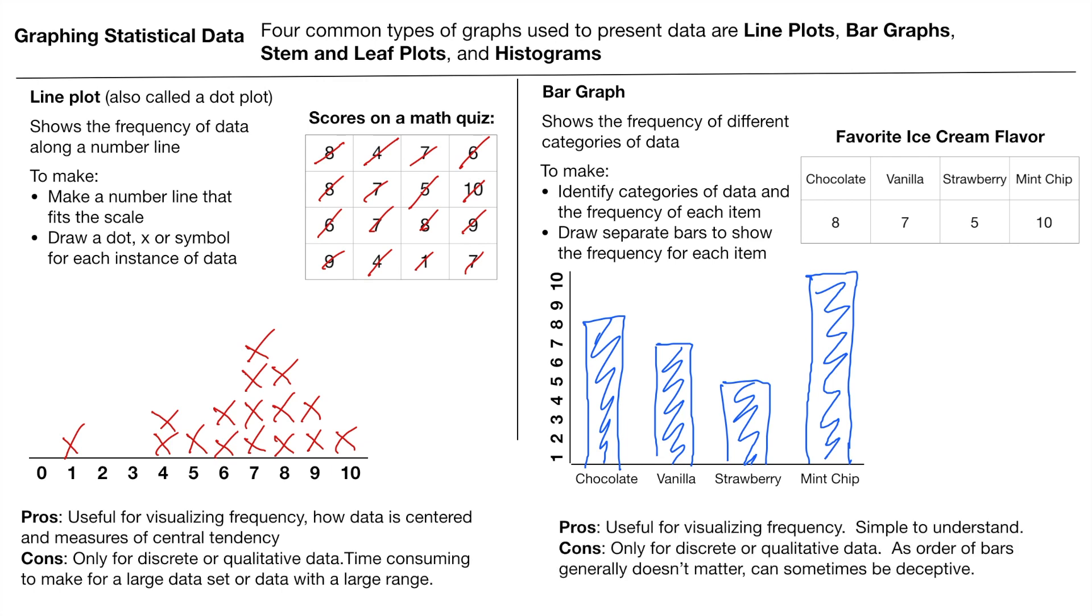So some pros and cons between both of these. You can see they're kind of similar looking in some ways. One thing, pros. This is useful for visualizing the frequency and how data is centered. So we can really see kind of that curve right there we've been talking a little bit about. We can also see measures of central tendency. So for example, if we wanted to calculate the median,